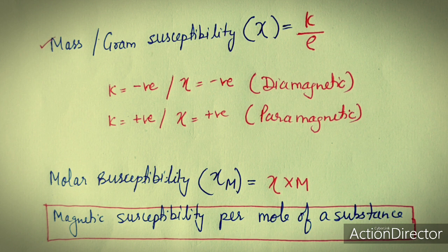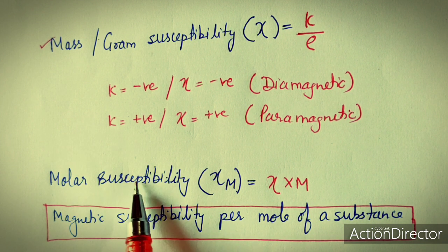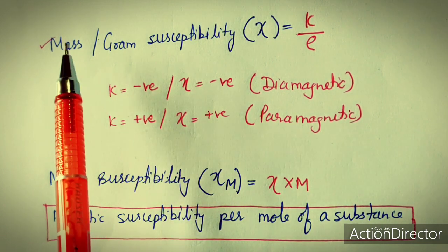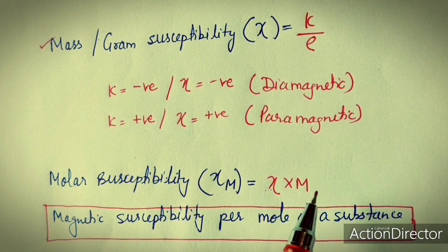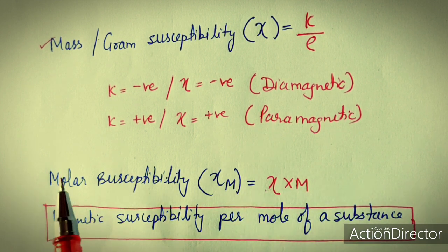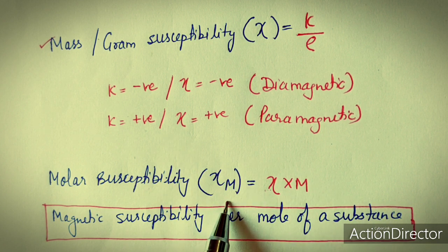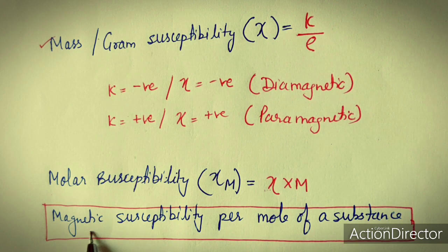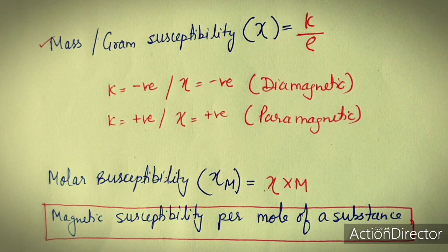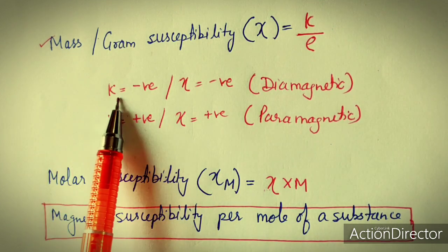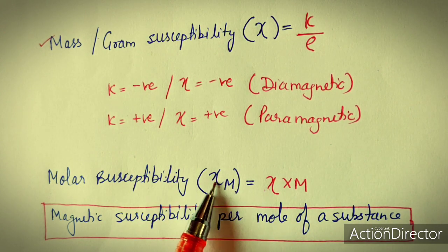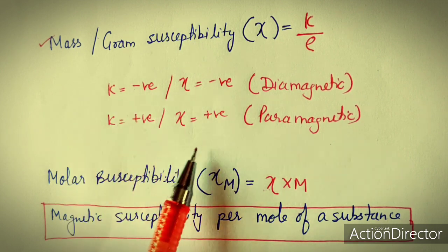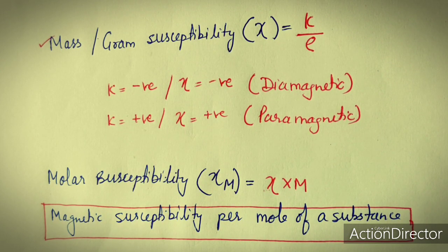One more susceptibility term is molar susceptibility. If we multiply the mass or gram susceptibility by the molecular mass of the substance, it is known as molar susceptibility, denoted by chi_m, defined as the magnetic susceptibility per mole of a substance. So three kinds of magnetic susceptibility: volume susceptibility, mass or gram susceptibility, and molar susceptibility - all helpful in explaining the magnetic behavior of any substance.